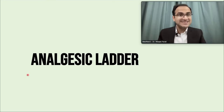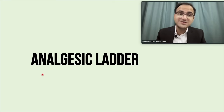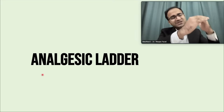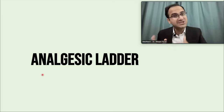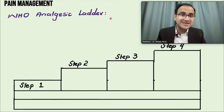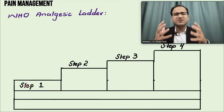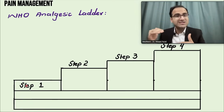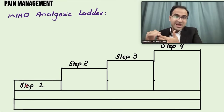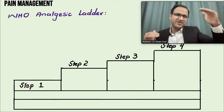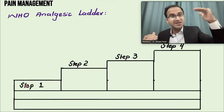The analgesic ladder is a very important topic for all doctors, nurses, and medical students. They must know about it because it guides how to proceed with a patient having pain, which drugs to use initially, and how to escalate. The WHO analgesic ladder divides treatment into four steps. Step one recommends starting from lower potency drugs, which have a lower side effect profile. Higher up the ladder, pain relief is better but side effects increase.